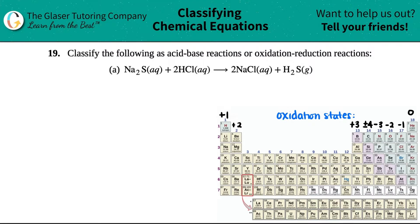Number 19. Classify the following as acid-base reaction or an oxidation-reduction reaction. And then we have letter A. So basically all we have to do is just figure out if this equation is either an acid-base reaction or an oxidation-reduction reaction.